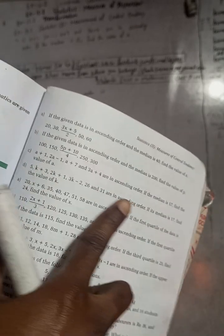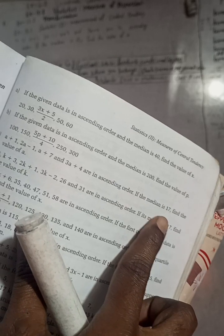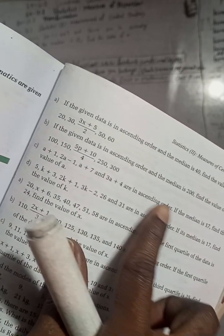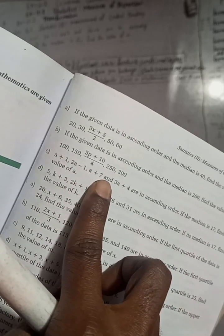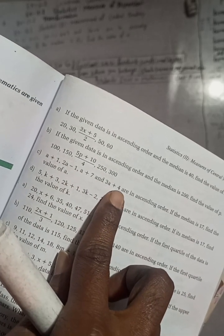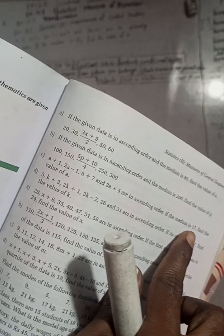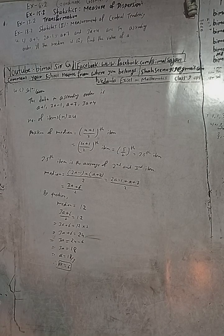Re-reading the problem: a+1, 2a−1, a+7, 3a+4 are in ascending order. If the median is 17, find a. The answer from the corrected version gives a = 6.